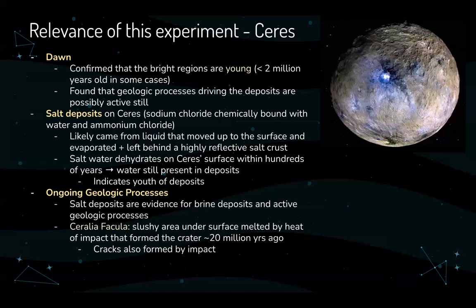Specifically for Cerealia Facula, the slushy area under the surface was melted by the heat that created this crater around 20 million years ago, and cracks also formed upon impact. What happened was: all of these salt deposits were originally frozen, then the meteor impacted Ceres and heated up that entire area to the point where these deposits could warm up enough to reach the surface. Along with that, cracks formed by the impact allowed for more water to seep up to the surface continually.